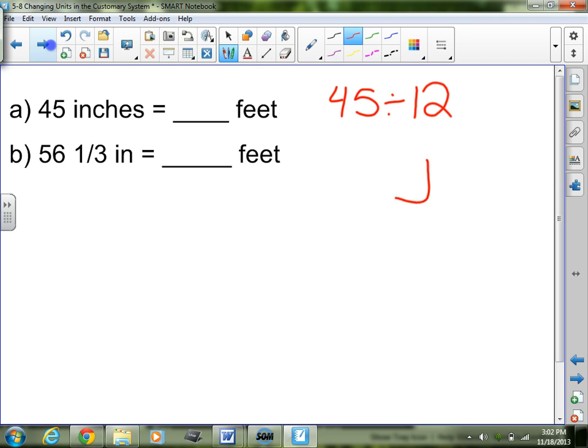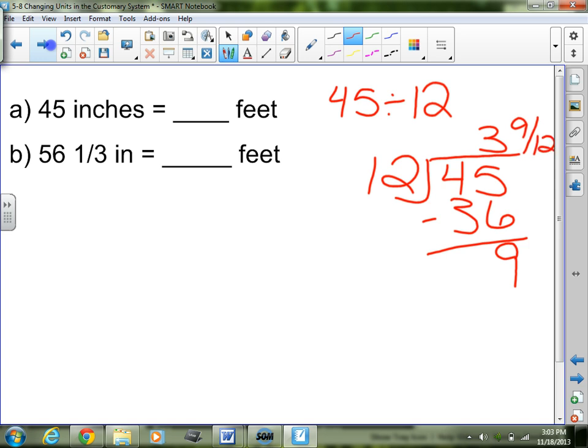There are 12 inches in 1 foot. 45 divided by 12. Let's see. 45, 12, that goes in 3 times. 9 left over, so 9 twelfths. But of course, I have to simplify. 3 goes into both 9 and 12. 9 divided by 3 is 3. 12 divided by 3 is 4. So my answer would be 3 and 3/4 foot.